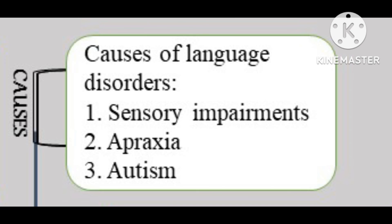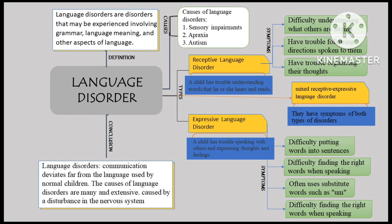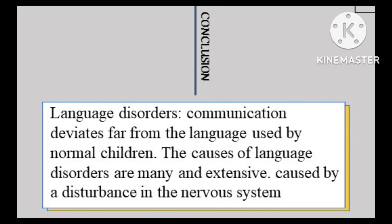The third cause is autism. Autism is a pervasive developmental disorder characterized by delays and disturbances in cognitive, behavioral, communication or language, and social interactions. From the explanation above, it can be concluded that language disorders occur if a person's communication deviates far from the language used by normal children.